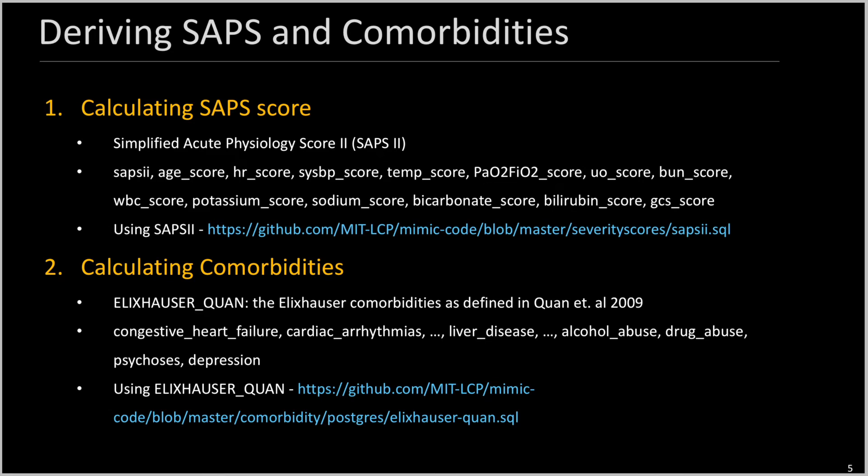The SAPS score is calculated in this project using the PostgreSQL materialized view provided with the MIMIC code base. The Simplified Acute Physiology Score, also known as SAPS, is a measure of patient severity of illness during the first day in hospital. Similarly, comorbidities from ICD-9 billing codes are derived using Alex Houser's materialized view also provided as part of the MIMIC code base.